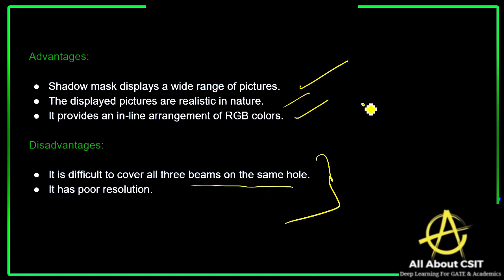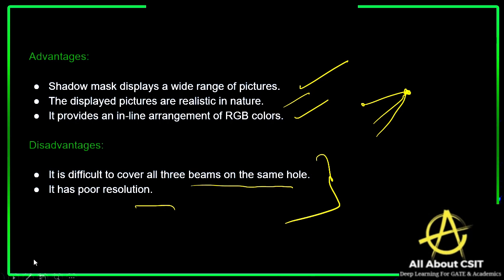The disadvantages of the shadow mask technique: it is difficult to cover all three beams on the same hole since all electron guns point at the same hole. It also has poor resolution — while it generates a wide range of pictures, the resolution is somewhat poor compared to other display technologies. This concludes the shadow mask technique; please let me know if you have any doubts.